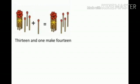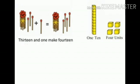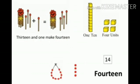Here, 1 bunch of math sticks is there — that is, 10 math sticks. With 3 math sticks, 13 plus 1 math stick equals 14 math sticks. 13 and 1 make 14. The 10-group of blocks is 1 ten, and 4 blocks is 4 units. 10 bits of 1 ten and 4 bits is 4 units. That is, 14, and the spelling of 14 is F-O-U-R-T-E-E-N.